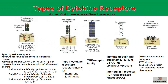There are four types of cytokine receptors plus chemokine receptors, so total five types of cytokine receptors. The first one is the Type 1 cytokine receptor, the second is the Type 2 cytokine receptor, the third is the TNF receptor family, the fourth is the IL-1 receptor family, and the fifth is the chemokine receptor. These five types have different structural features and some have common downstream signaling pathways.